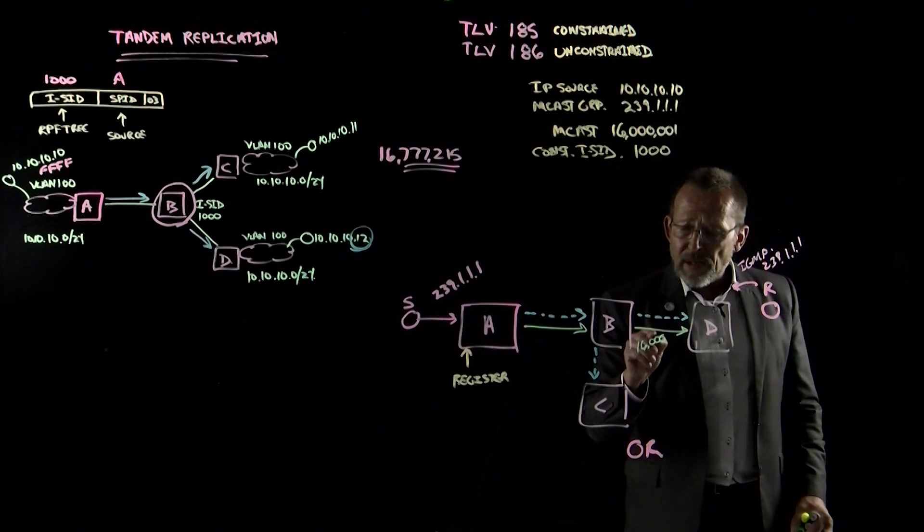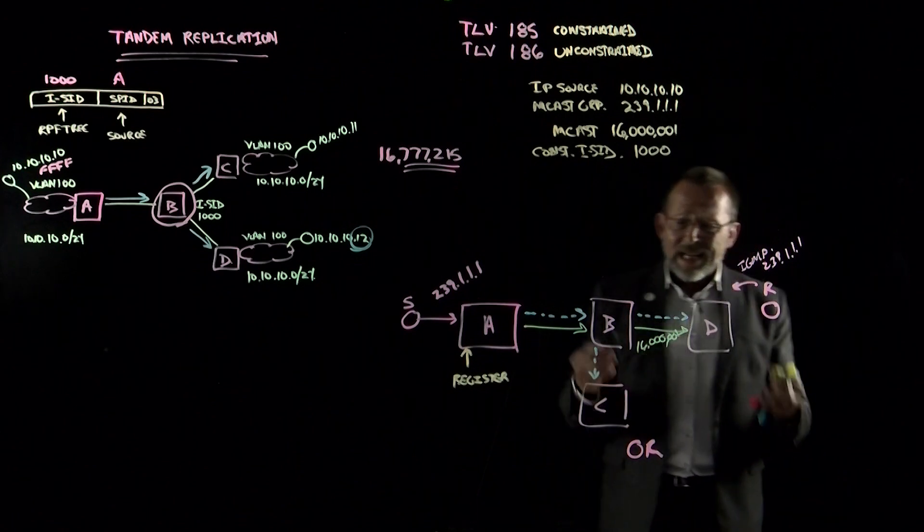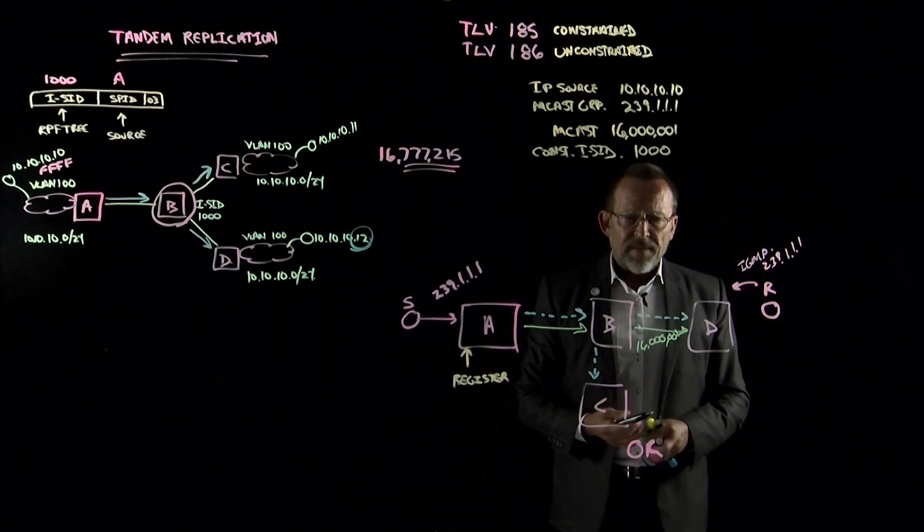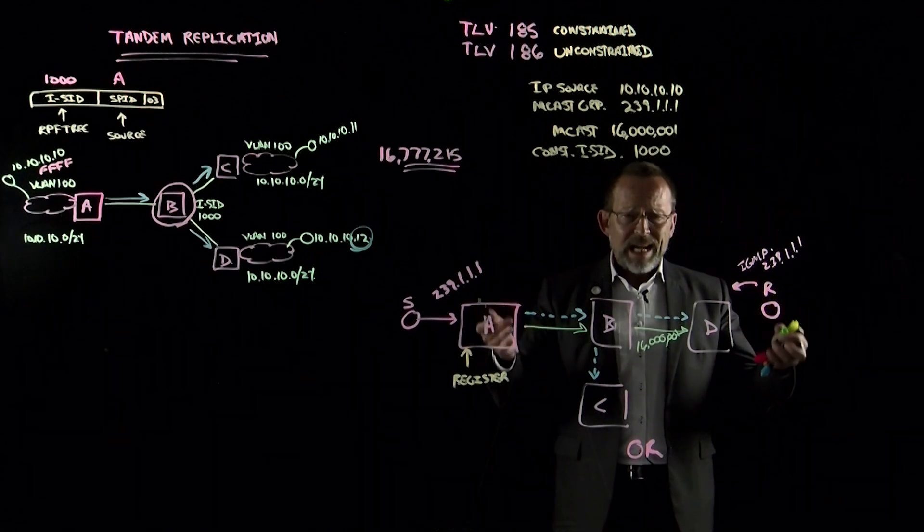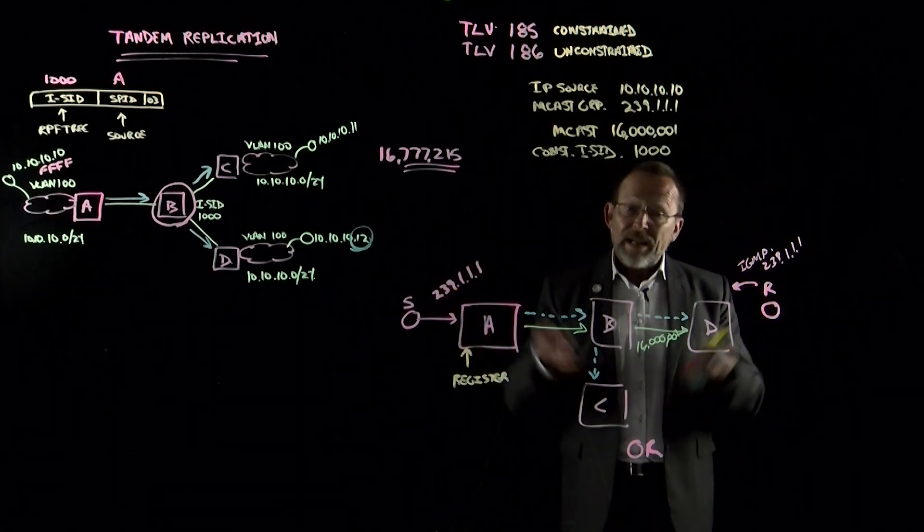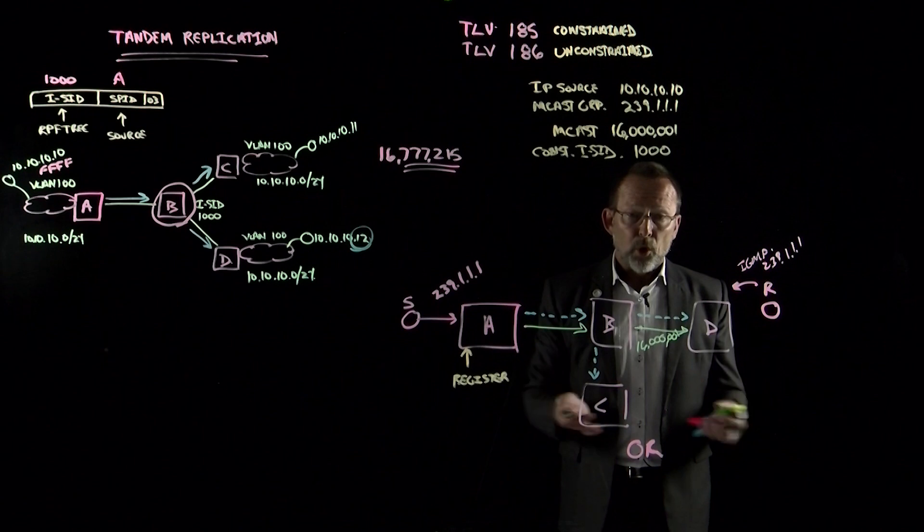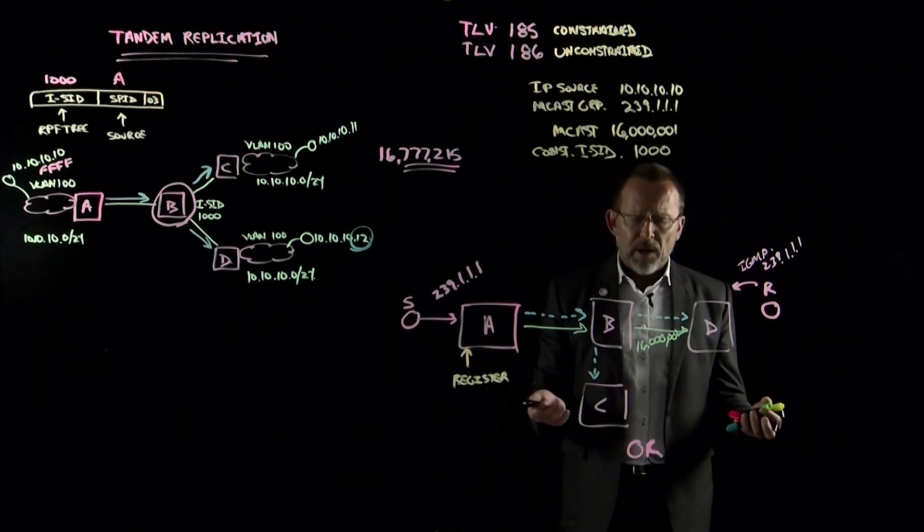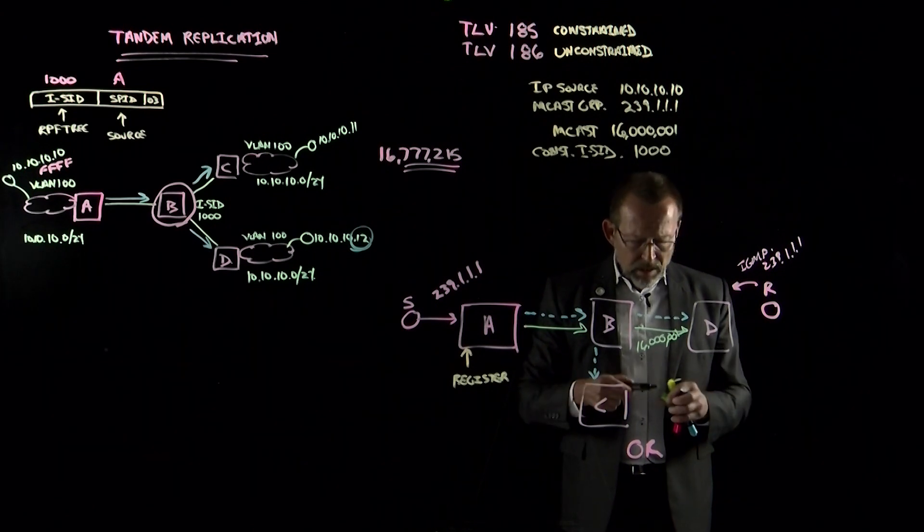But note how ISID 16,000,001 is constrained inside ISID 1000. If a member from a community from ISID 2000 or any other ISID were to request this group in this semantic, it would be denied. It simply can't be reachable because they're not part of the constrained community.